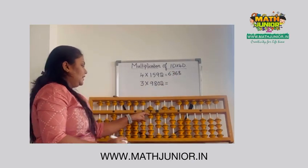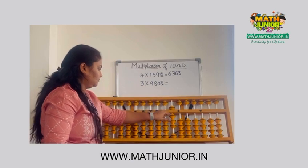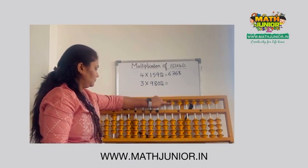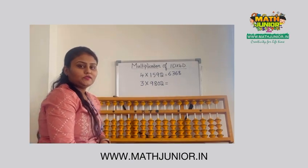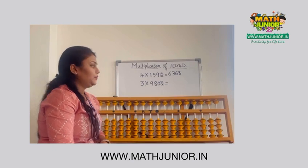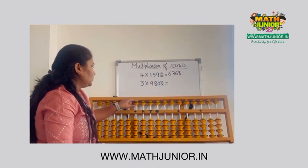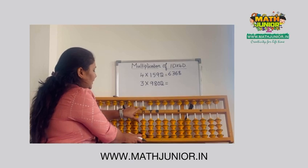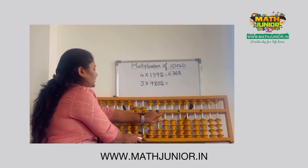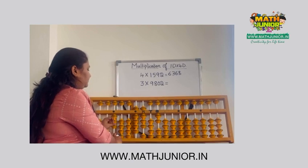Next question. 3 into 9,802. First we have to place 9,802 using 1100 terms and you need to place. Then skip 2 rods and place 3 here.